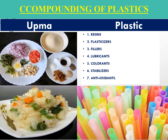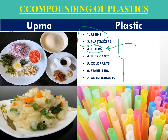In compounding of plastic, the polymer is mixed with different types of additives. Fillers are used to increase the tensile strength and stability of the material and also to decrease the cost. Instead of fillers, we add fibers — so this is called fiber reinforced plastic, which is essentially the compounding of polymers.